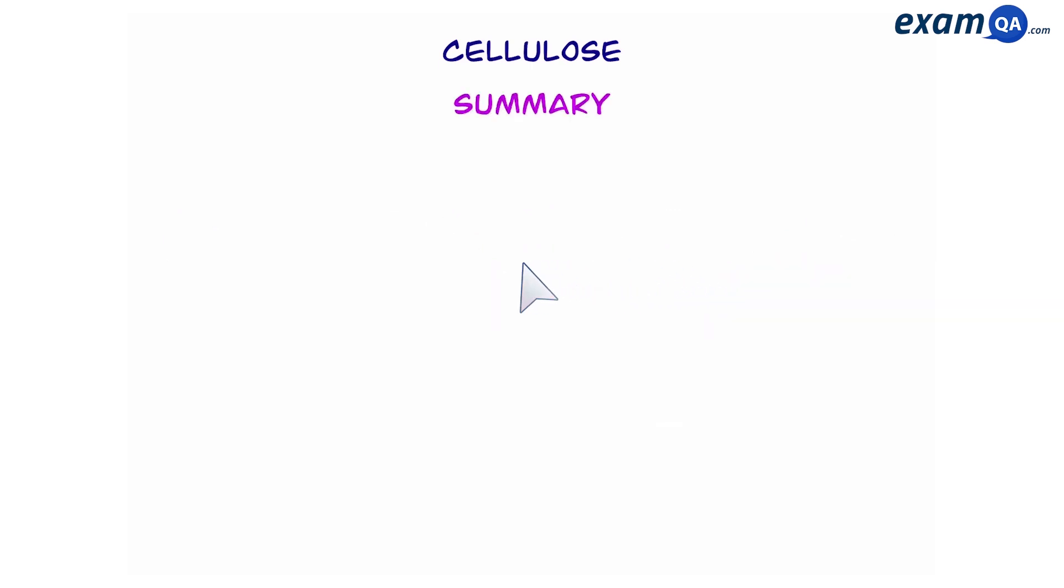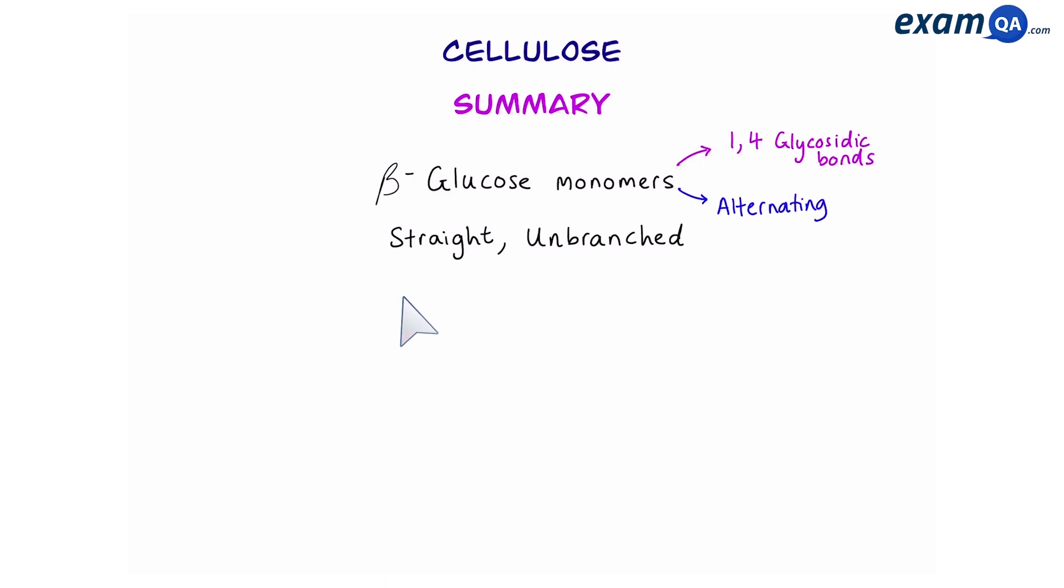All right, so to summarize, cellulose is made of beta glucose monomers that are alternating and are joined together by 1,4 glycosidic bonds. It is a straight and unbranched molecule, unlike amylopectin and glycogen, and many cellulose molecules can come together to form a microfibril. And this is thanks to many hydrogen bonds forming cross-links, which gives the cell wall strength and rigidity, and this helps to prevent the cell from bursting.